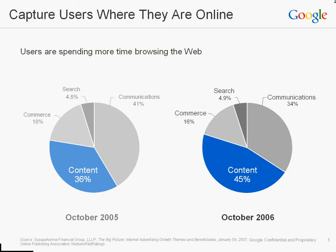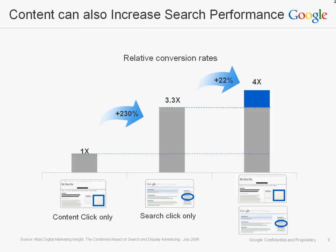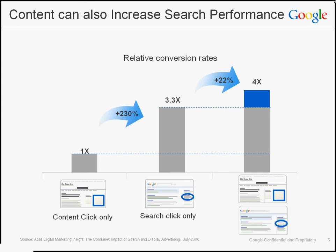We know that users actually spend 45% of their time on content, 34% communicating, 16% on commerce, and 5% on search. So the content network allows you to capture more of a user's time online. According to a study by Atlas Digital Marketing, exposing search users to display media from the same advertiser results in a 22% increase in conversions over search alone, suggesting a synergy between these two channels that cannot be measured separately.